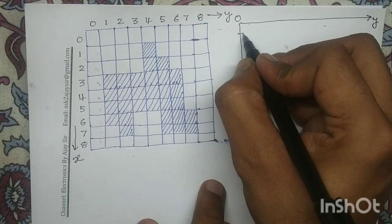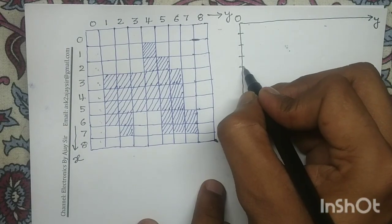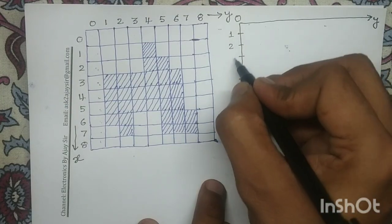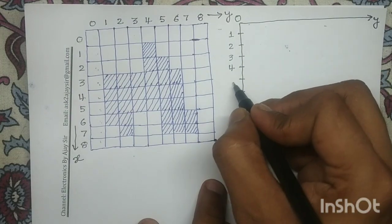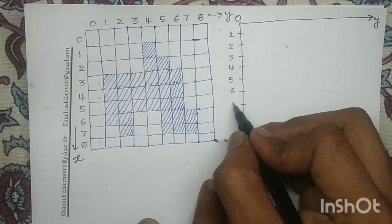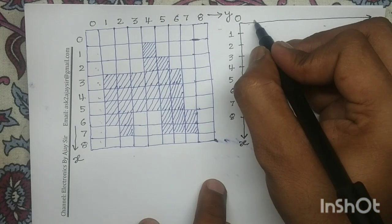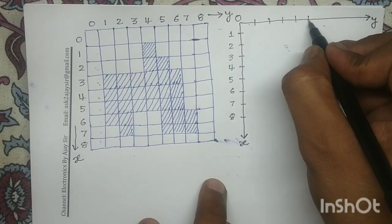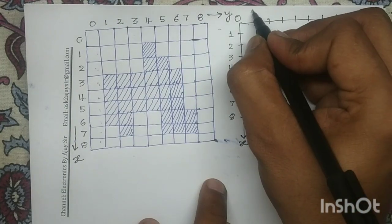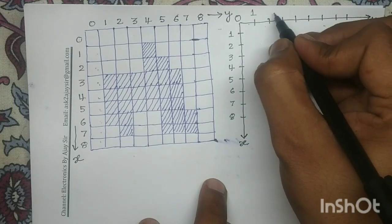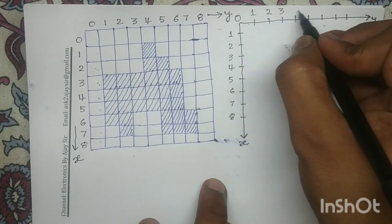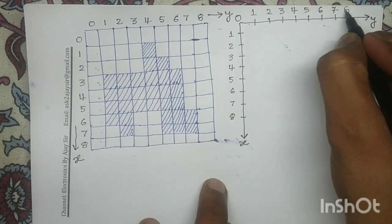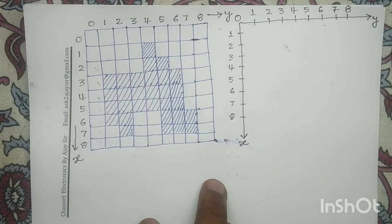Let me mark the indexing along x as 1, 2, 3, 4, 5, 6, 7, 8 and similarly along y. Now for simplicity, let me mark the major axis.